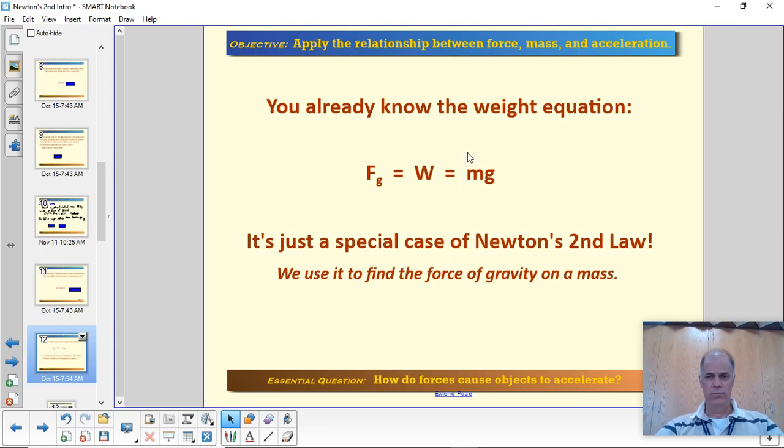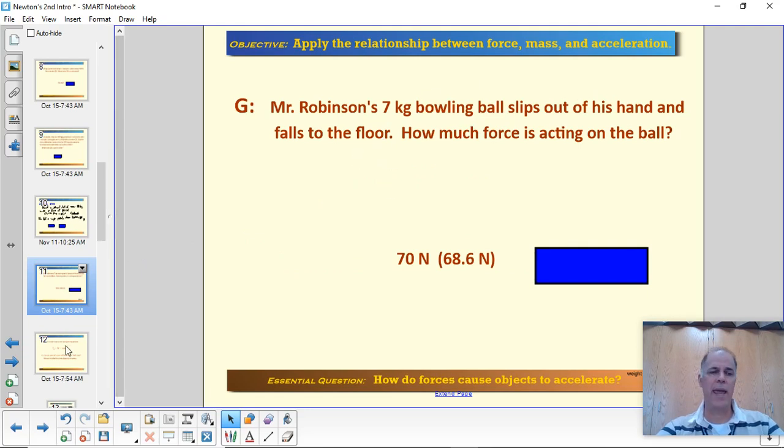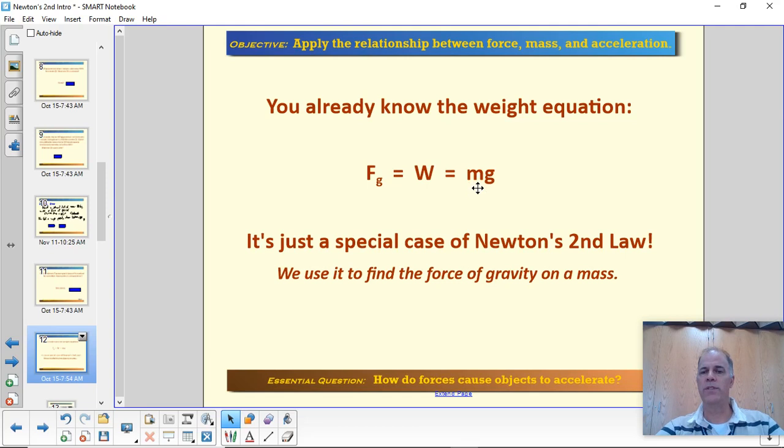We said that the weight of an object, which is the force acting, say, on the bowling ball when it slips out of my hand, the weight of the ball is equal to its mass times the acceleration due to gravity. Now this is a special case of Newton's second law. This is the force acting, happens to be the force caused by gravity, is equal to the mass of the object times the acceleration that that object will experience if it falls. Special case of Newton's second law where the acceleration is that particular number of 9.8 meters per second squared. We use the acceleration, the observed acceleration of a falling object to deduce what the force of gravity is.